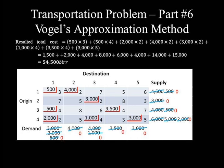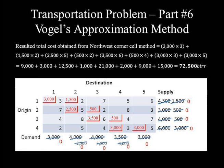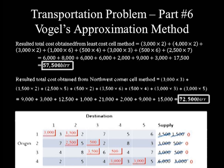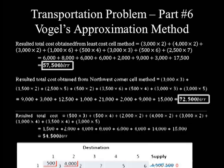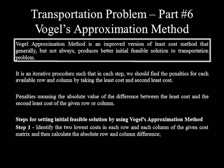The initial feasible solution for this same problem was also set using the least cost cell method and northwest corner cell method, yielding total costs of 57,500 and 72,500 respectively. The least total transportation cost of 54,500 obtained by Vogel's approximation method proves the generalization made at the beginning: Vogel's approximation method is an improved version of the least cost method that generally, but not always, produces a better initial feasible solution to transportation problems.